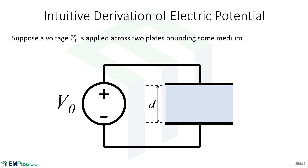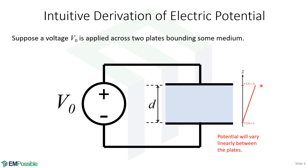Let's approach this from a different perspective and think of the potential between two plates of a capacitor — really just two parallel plates separated by some medium, with gap D. We're applying a voltage V0 across those two plates. The top plate will be at voltage V0, and the bottom plate, which we assume is ground, will be at zero volts.